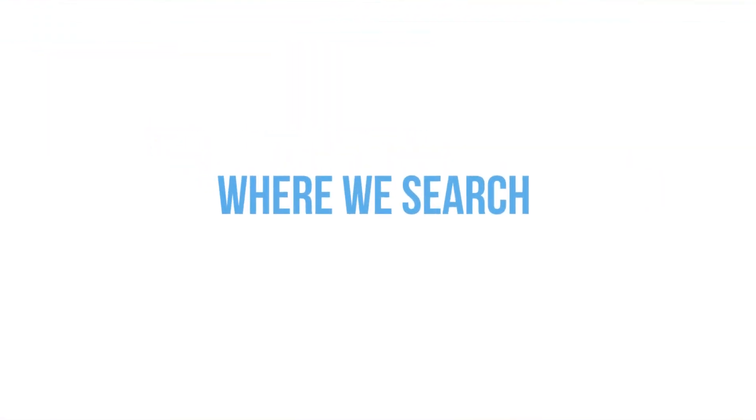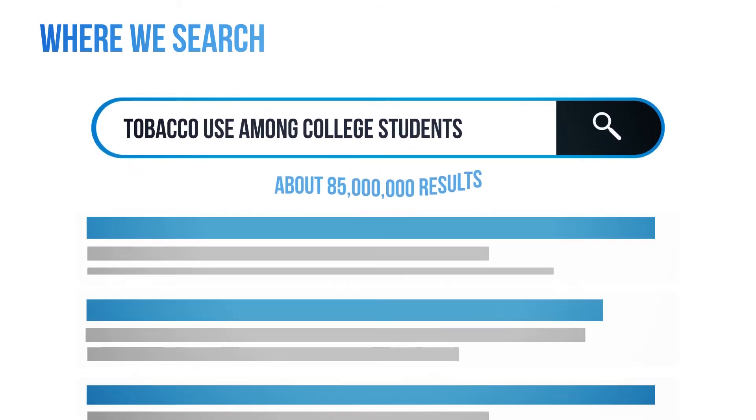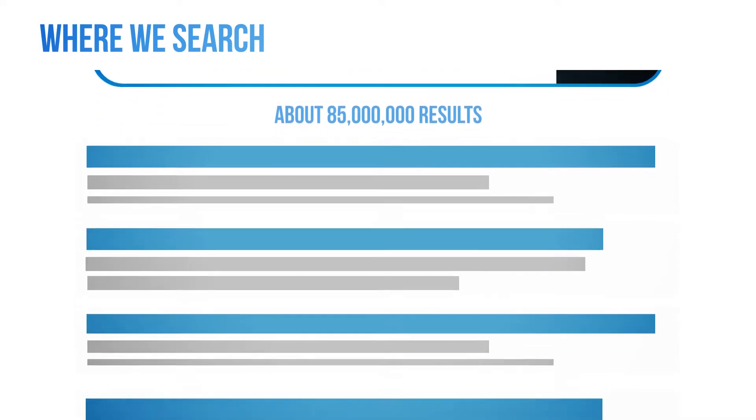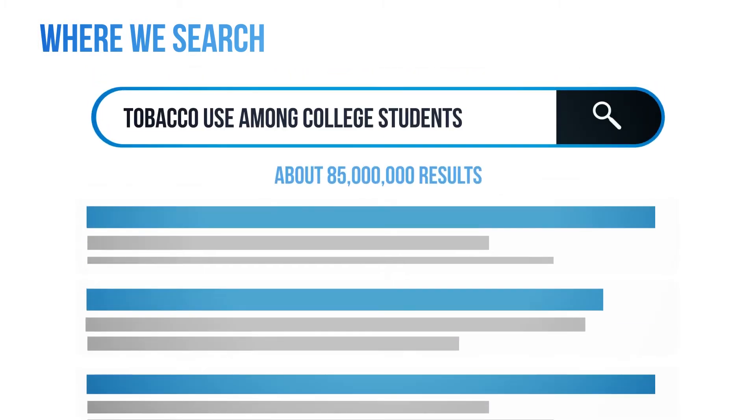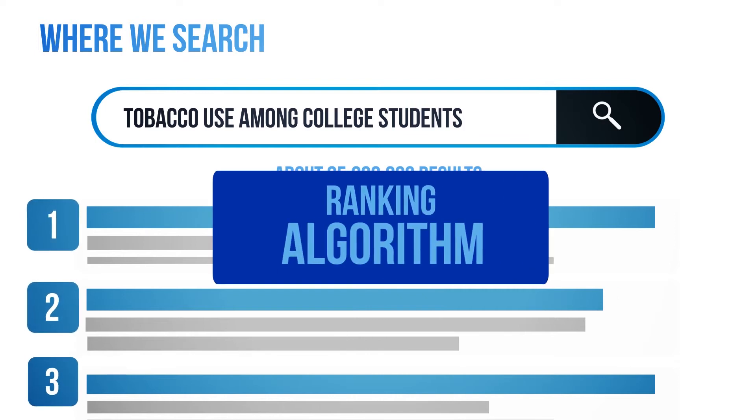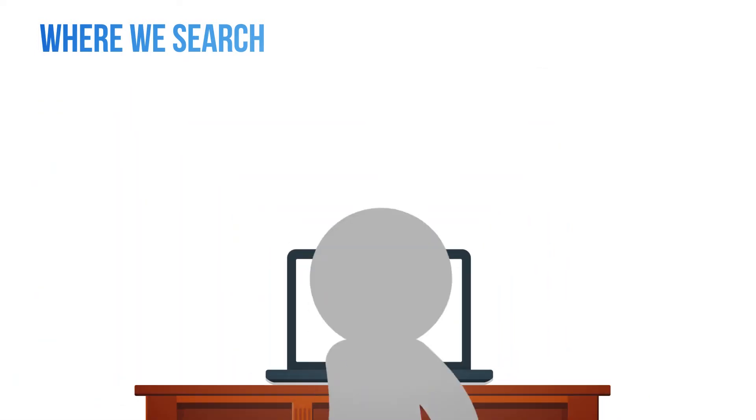Where we search for information has an outsized impact on the entire research cycle. We're all familiar with Google, but if we Google tobacco use among college students, we get more than 85 million results. That's a lot to go through. And really, how often do you actually scroll past the first page? The order of Google search results are determined by a ranking algorithm, code written by human programmers.